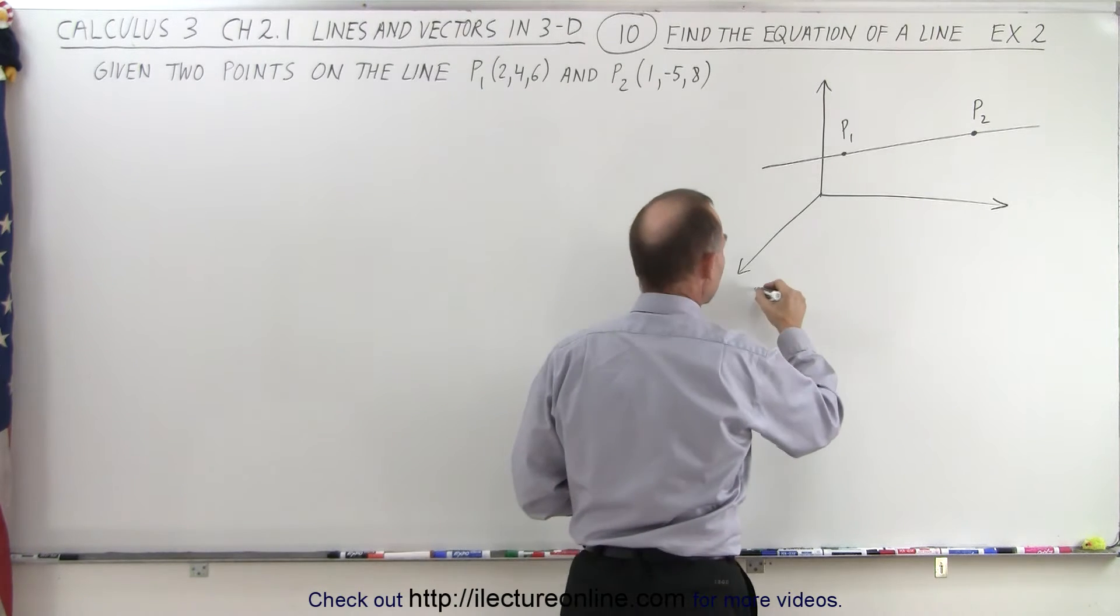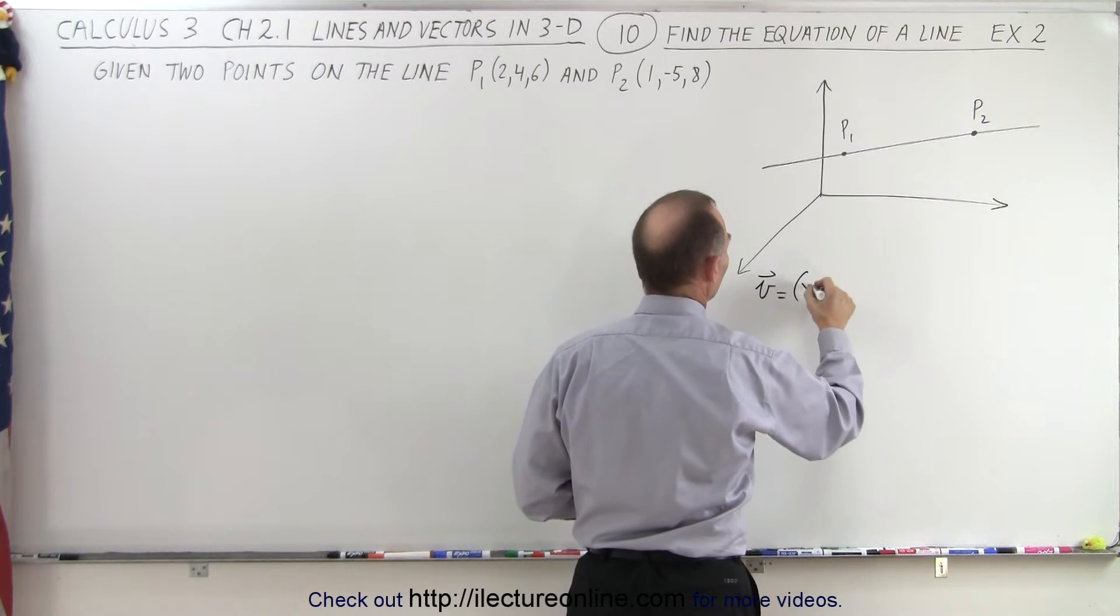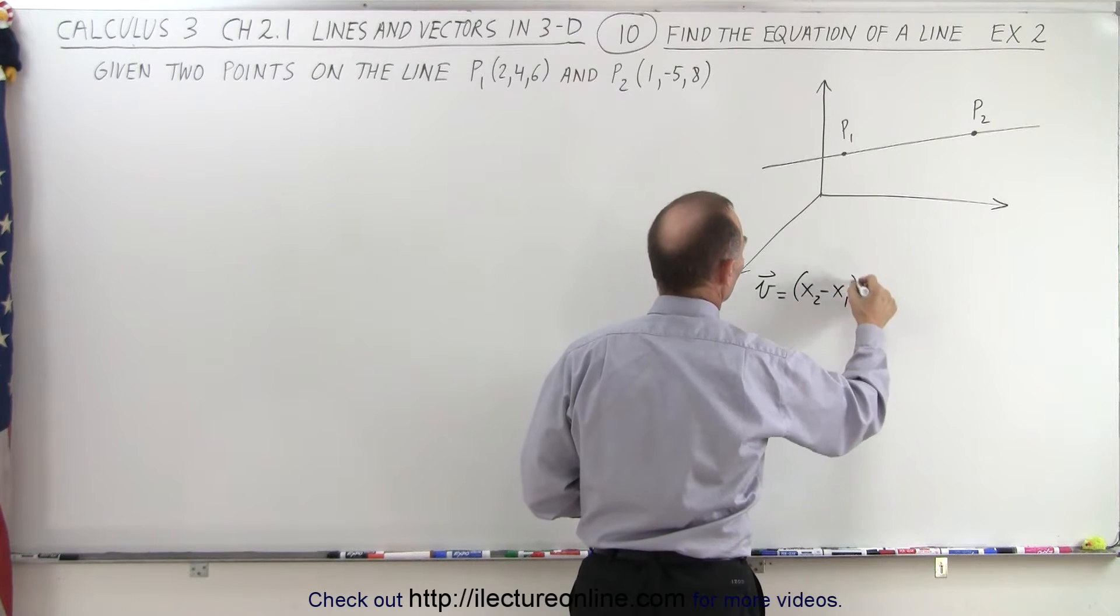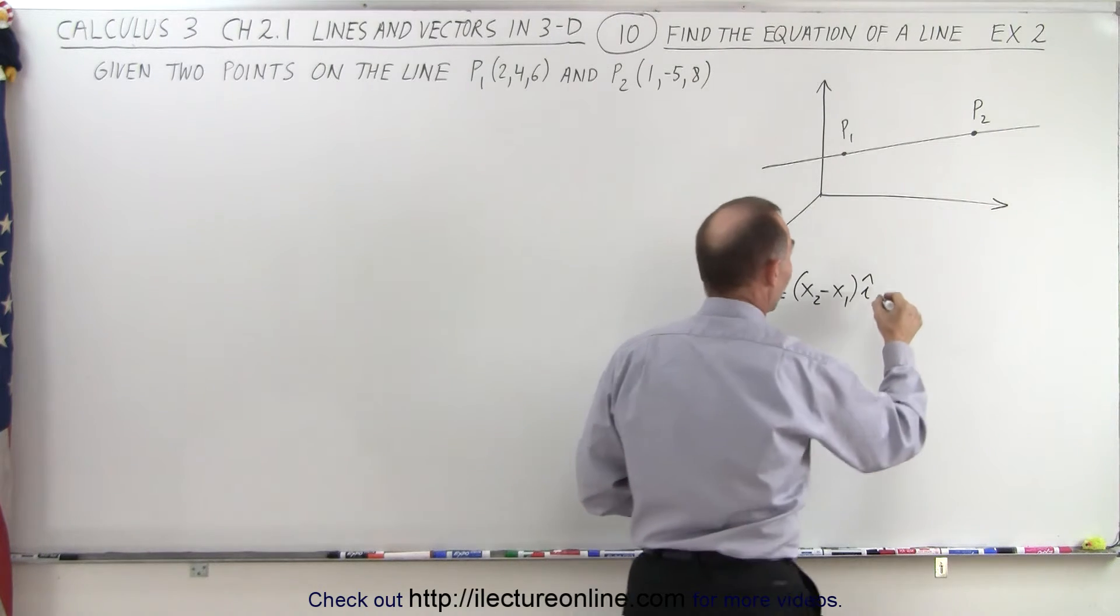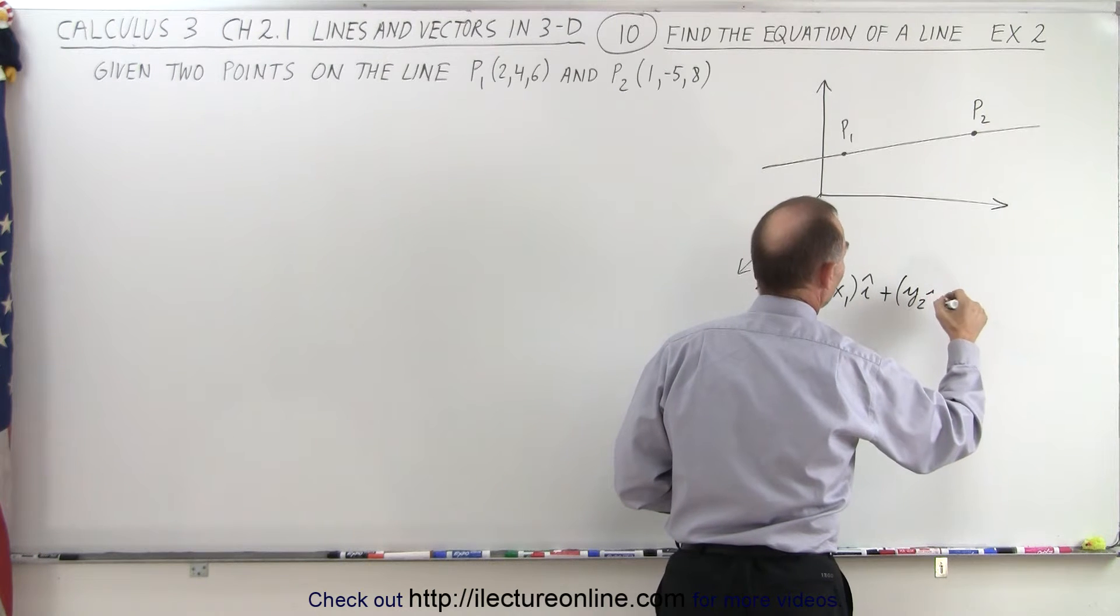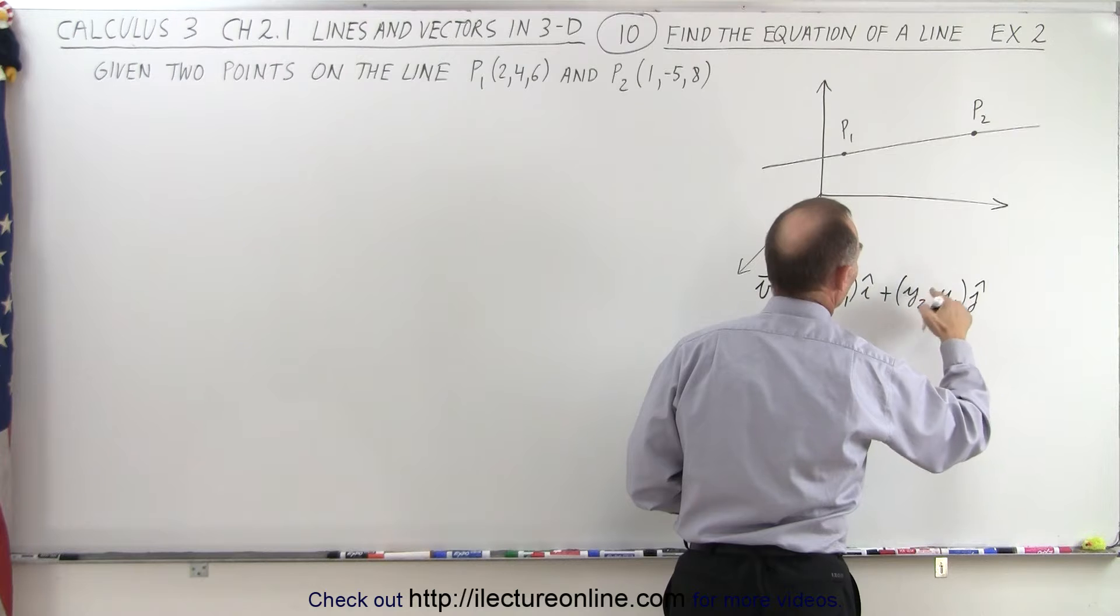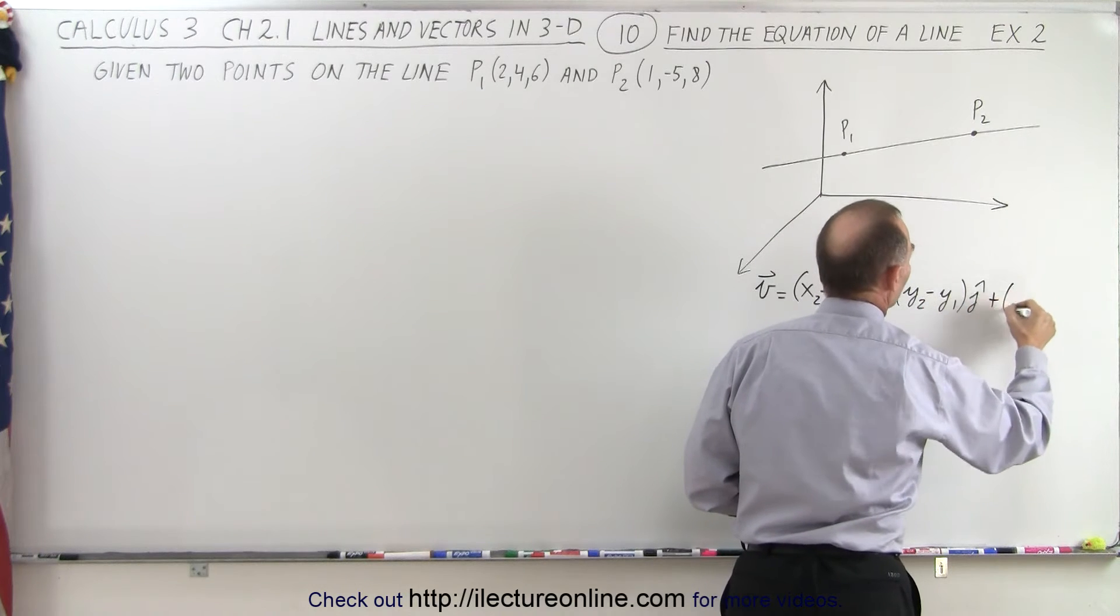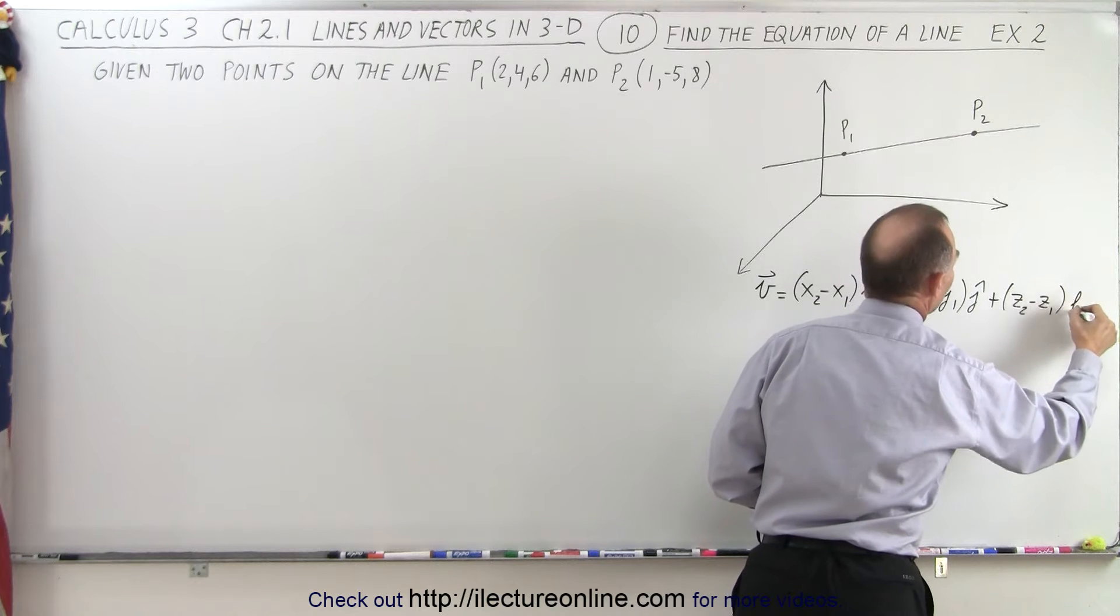In other words, v can be defined, v being the parallel vector, is equal to the difference between the x coordinates in the i direction, plus the difference in the y coordinates, y2 minus y1 in the j direction (this should be minus here), and plus z2 minus z1 in the k direction.